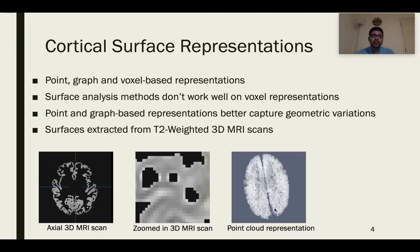There are several different representations for cortical surfaces. The major ones are point, graph, and voxel-based representations. The simplest one is the voxel-based representation, where the surface is represented as a regular 3D grid of voxels, where a voxel is like a 3D pixel or a cube. Surface analysis methods using geometric deep learning don't work well on voxel representations, as it's difficult to capture fine geometric details due to large memory requirements. Unfortunately, surfaces are often represented at a resolution too low to capture these details.